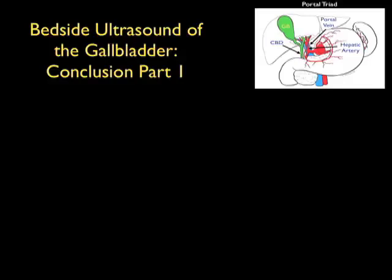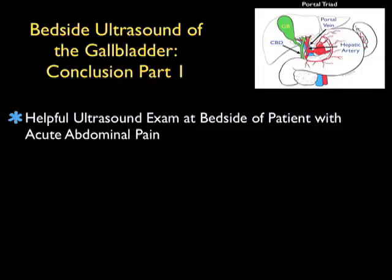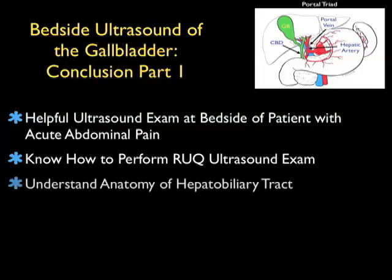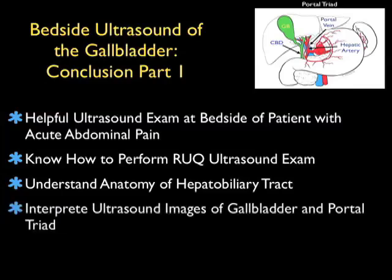My conclusion points for this SoundBytes module covering part one of gallbladder sonography: gallbladder ultrasound at the patient's bedside is a very helpful exam for evaluating the patient presenting to the emergency department with acute abdominal pain. Hopefully through this module, you now know how to perform the right upper quadrant ultrasound examination and understand the anatomy of the hepatobiliary tract essential to bedside sonography. By going through the footage and looking at the ultrasound imaging of the gallbladder and portal triad, you now know how to interpret the ultrasound images you will attain at the patient's bedside.